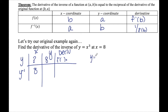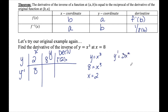Since y equals x cubed and I know the y-coordinate of the original is 8, I replace y with 8 and solve for x, getting x equals 2. So I'm looking for f prime of 2. The derivative of x cubed is 3x squared, so f prime of 2 is 3 times 2 squared, which is 3 times 4, giving 12. The derivative of the inverse function is 1 over 12 — the same answer we got in the previous example.